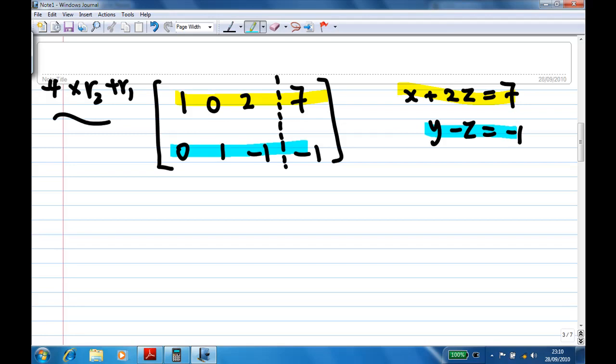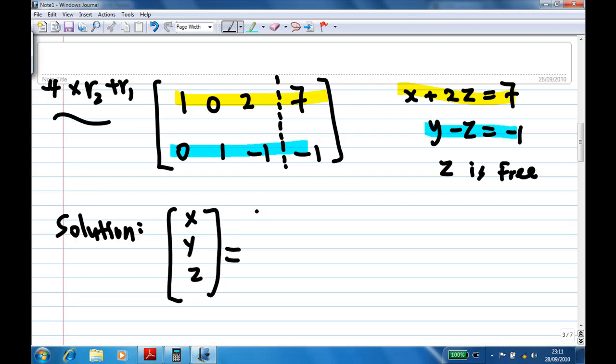In any case, since z doesn't have a leading one, z is free. Therefore, the solution of the system equation, if you try to look at them, you will find that the solution consists of x, y, z, where x is actually 7 minus 2z from the first equation.